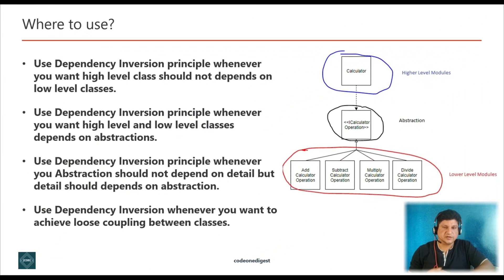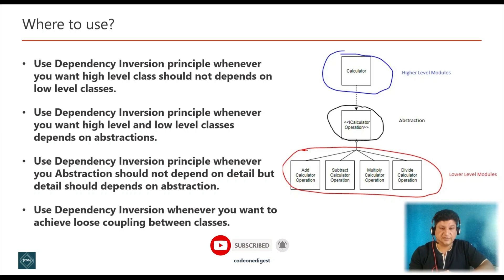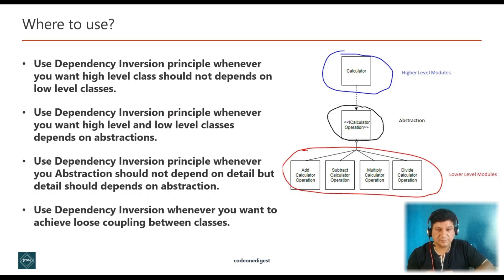So the first question is: where and how to use Dependency Inversion Principle in your project? Use it whenever you want high level classes to not depend on low level classes, and low level classes should depend on abstraction. Use it whenever your abstraction — that is, interface or abstract class — should not depend on the detail class, which is the implementation class. Use Dependency Inversion Principle whenever you want to achieve loose coupling between classes.